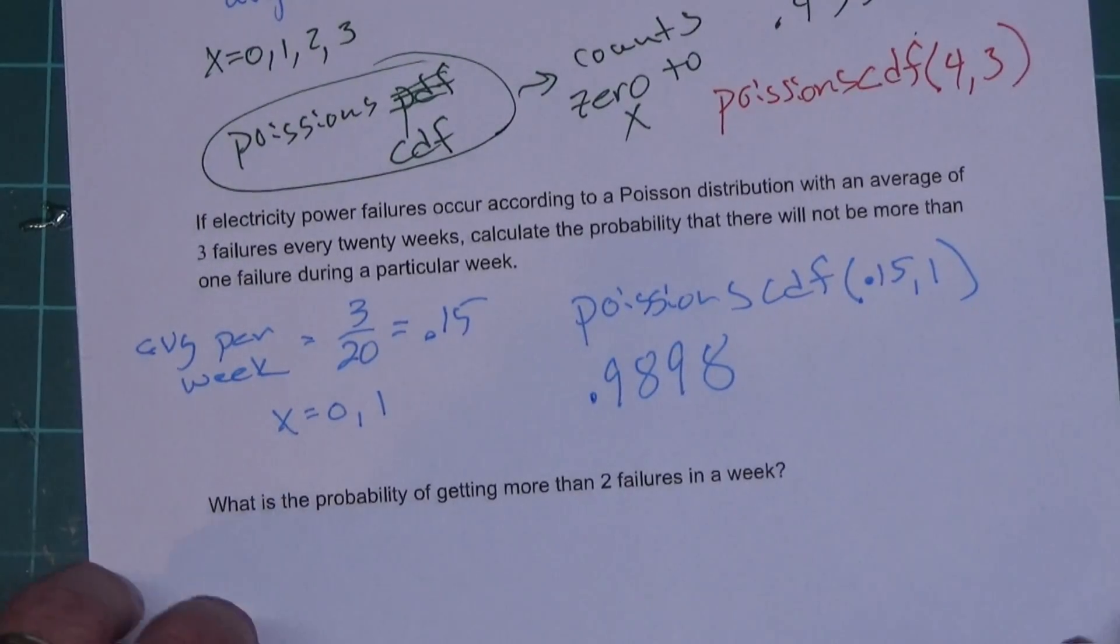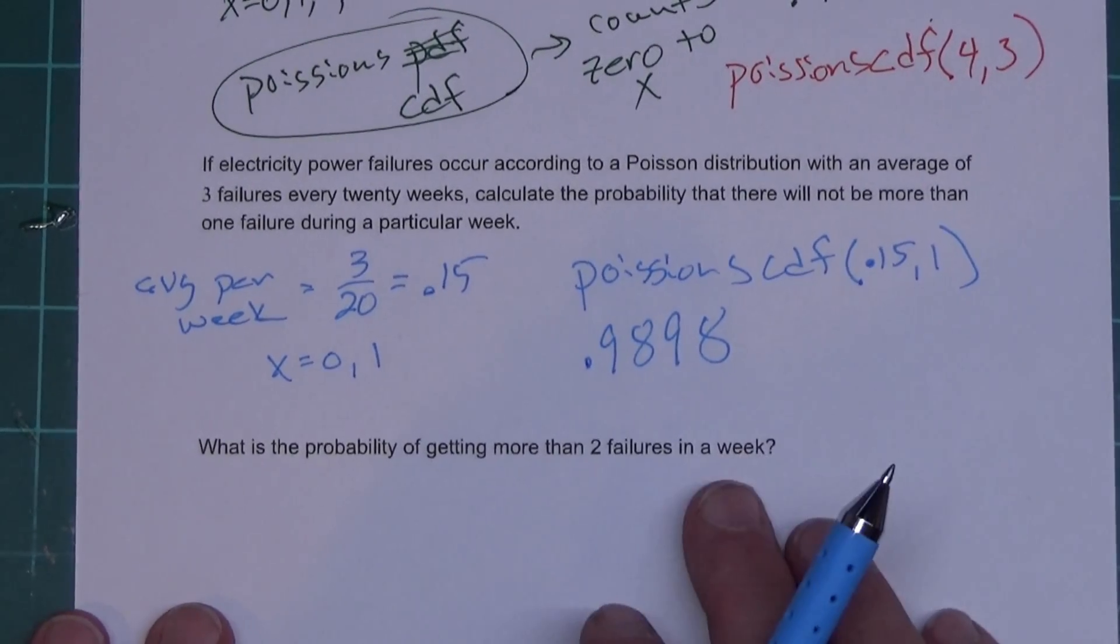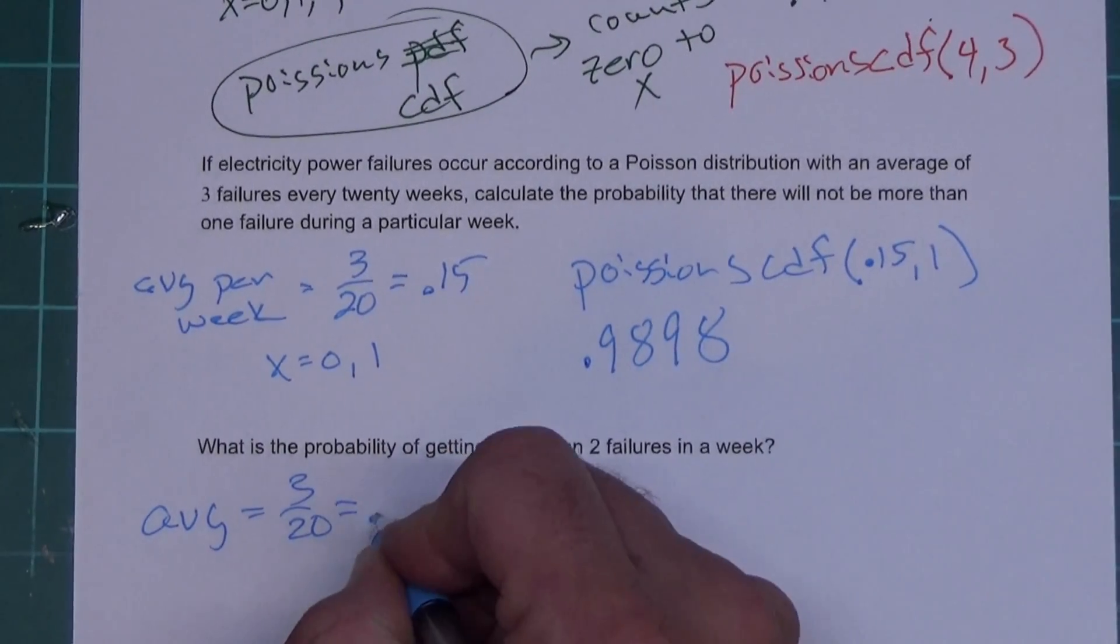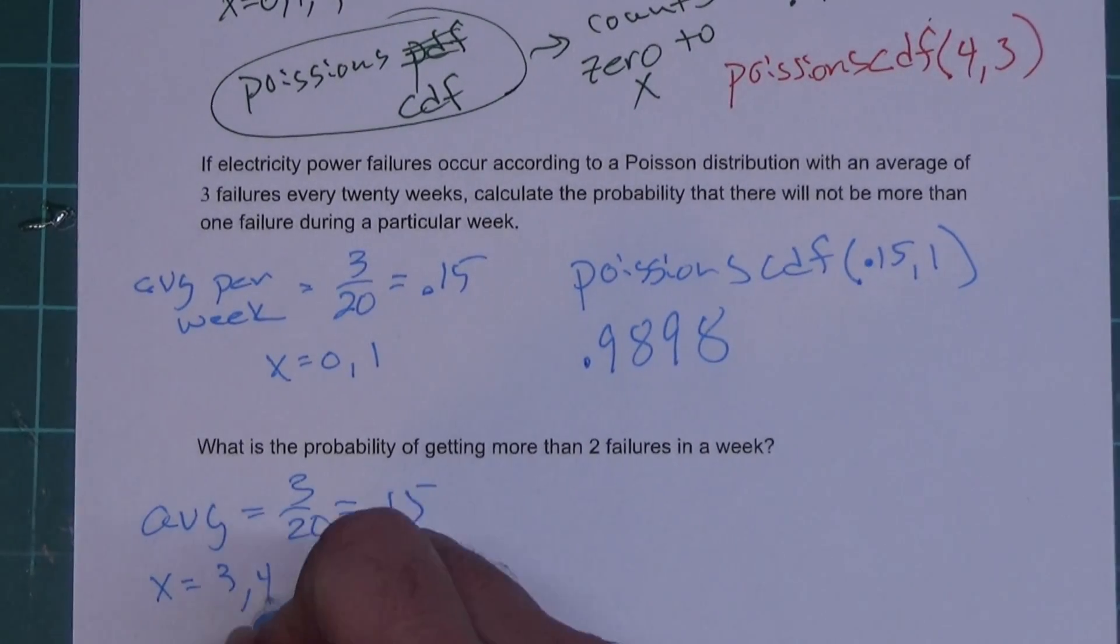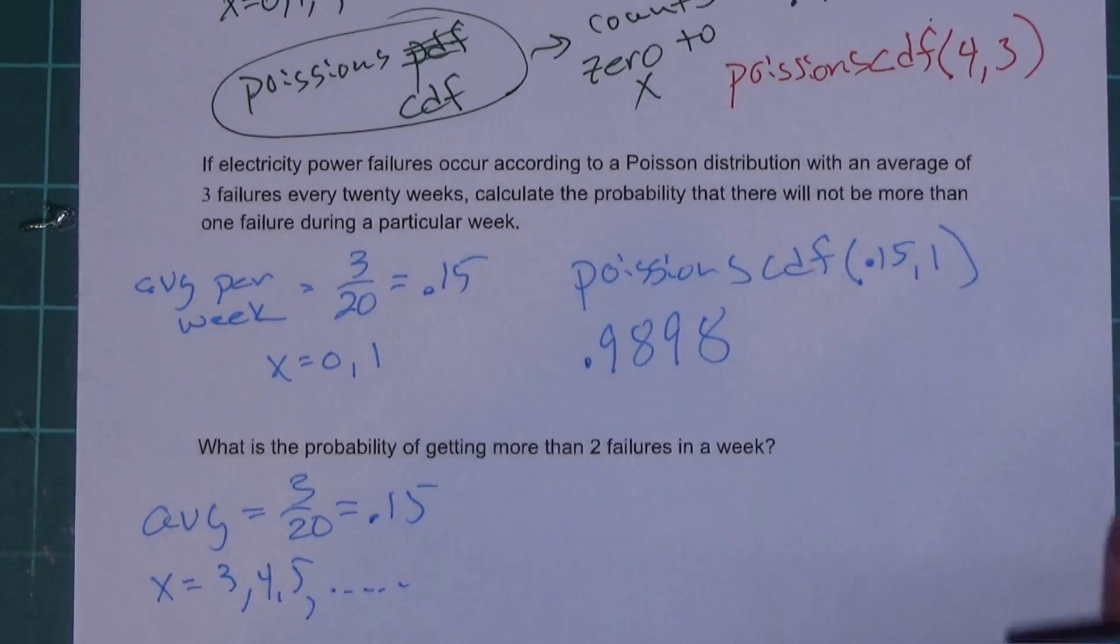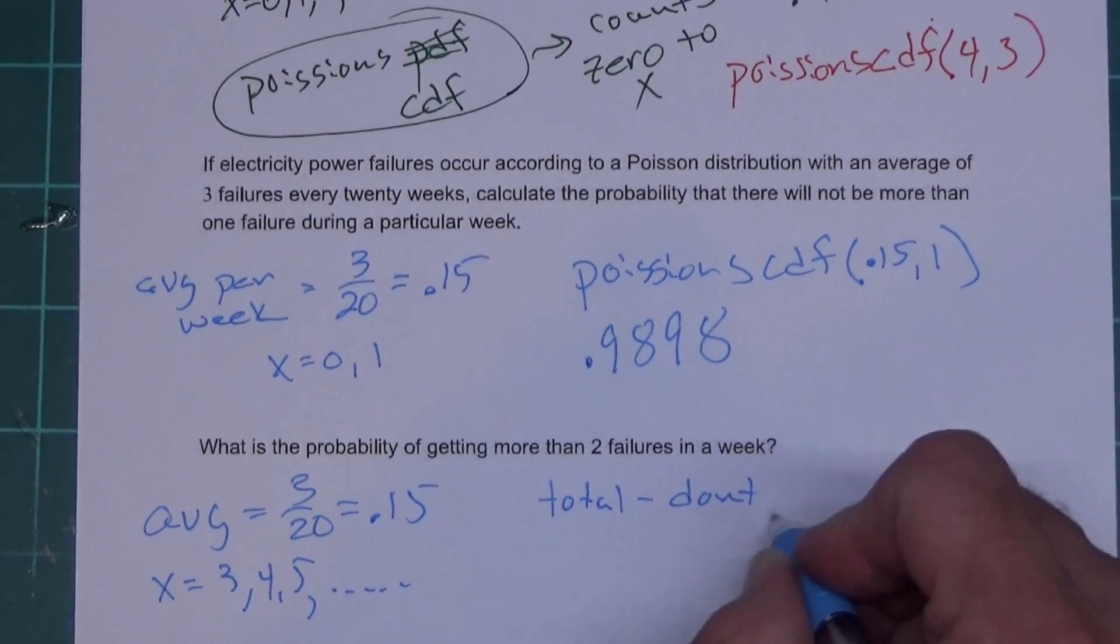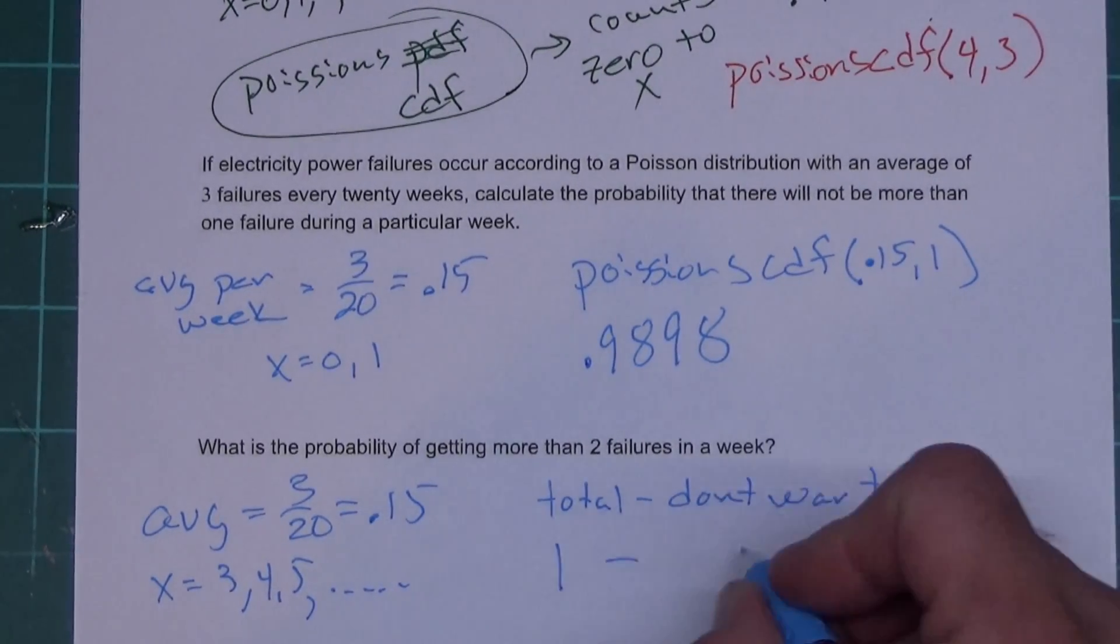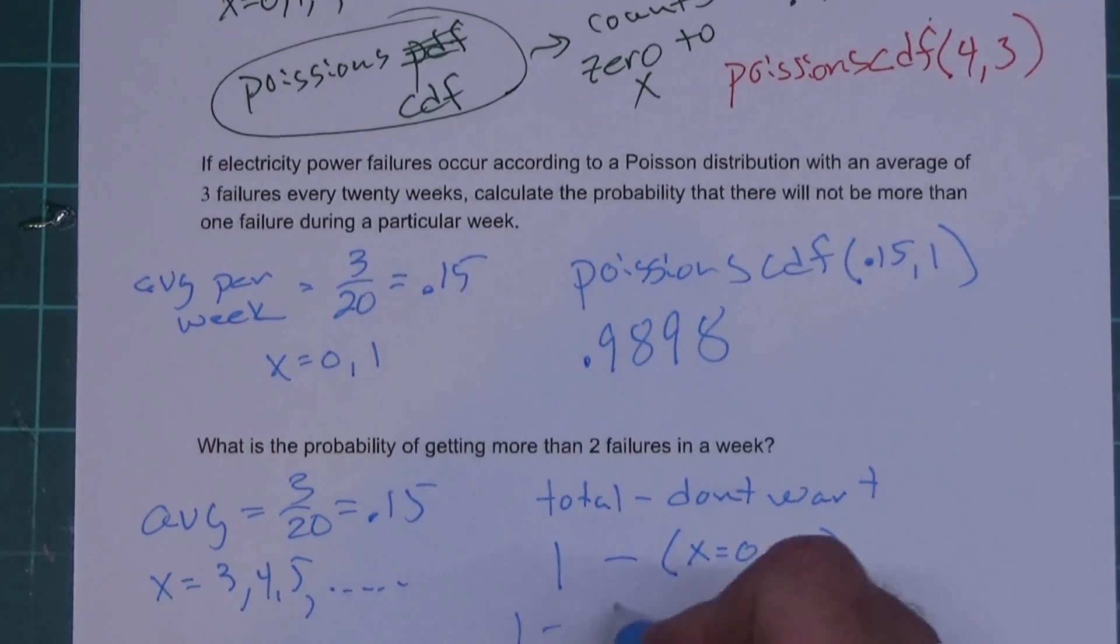All right, one more. What is the probability of getting more than two failures in a week? Okay, so we're sticking with the average of 3 over 20, or 0.15. But more than two - that means X is three, four, five, keeps going. Okay, that doesn't match what we're doing here, so what we're gonna have to do is total minus don't want. So our total will be one, because the total for all probability is always one. What I don't want will be X equals zero, one, and two. This would be one minus Poisson's CDF of 0.15 comma two.